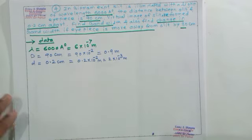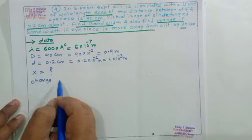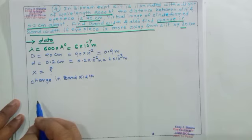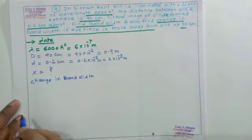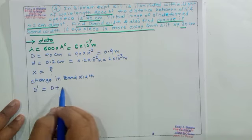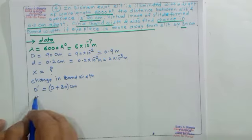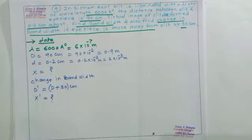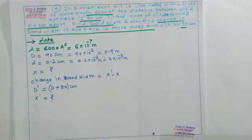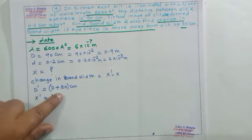First we find bandwidth, then later the change in bandwidth. When the eyepiece is moved away from the slit by 30 cm, D-dash = D + 30 cm. So the new bandwidth x-dash will be calculated using D-dash. Change in bandwidth = x-dash − x, because D increases by 30 cm, making D-dash = D + 30 × 10⁻² meter.